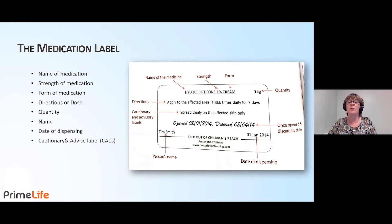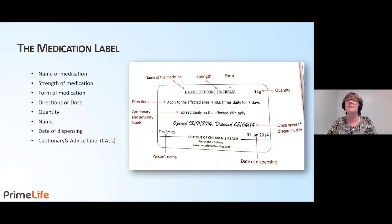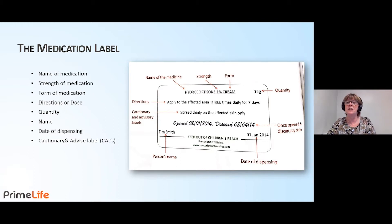In this example, the form is cream, but it could be tablets, gel, suspension, etc. Directions or dosage: the directions on this example is 'apply to the affected area three times a day for seven days'. The quantity, which on this example is 15 grams.